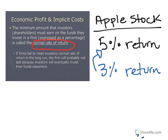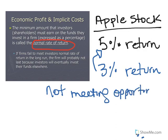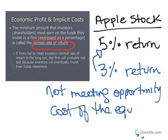That's the same thing as saying they're not meeting the opportunity cost of the equity capital. The only reason somebody buys stock in a company is to make money, and the amount you're expecting to make is referred to as the normal rate of return. If I buy Apple stock expecting a 5% return and Apple consistently only gives me a 3% return, they're not meeting my opportunity cost and eventually I'm going to want to invest elsewhere, even though I'm actually making positive money.